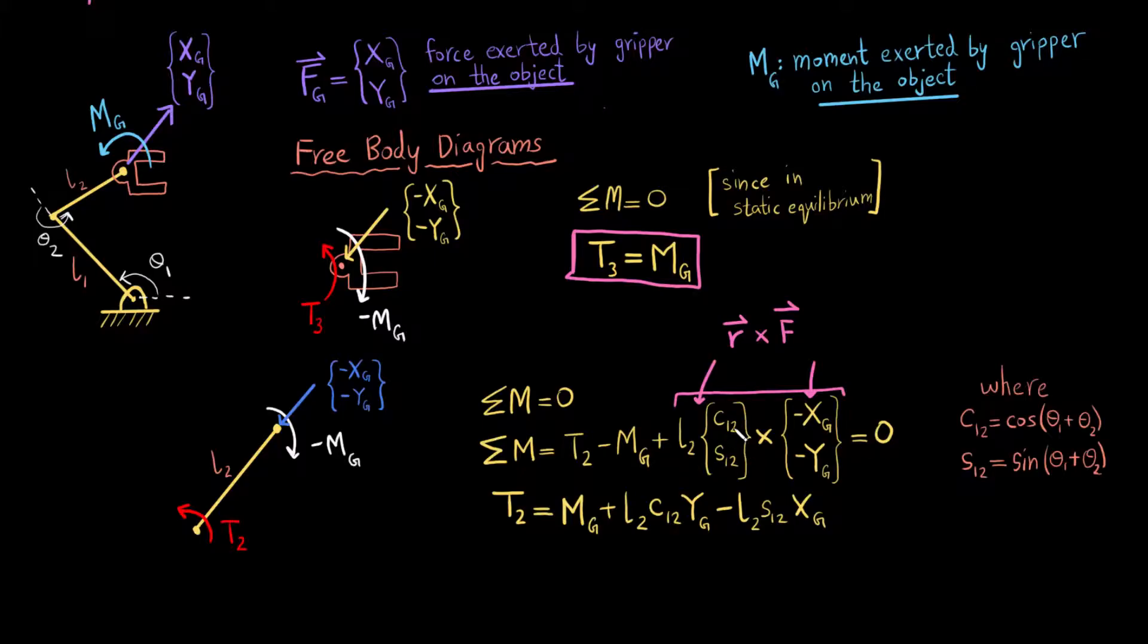And I just set it equal to zero. And what I have done is in order to write it more compactly, I have written C12, which just means cosine of theta_1 plus theta_2. And similarly, S12 is sine of theta_1 plus theta_2. And this is the second equation that I get. So what this equation tells me is how powerful my second motor needs to be.